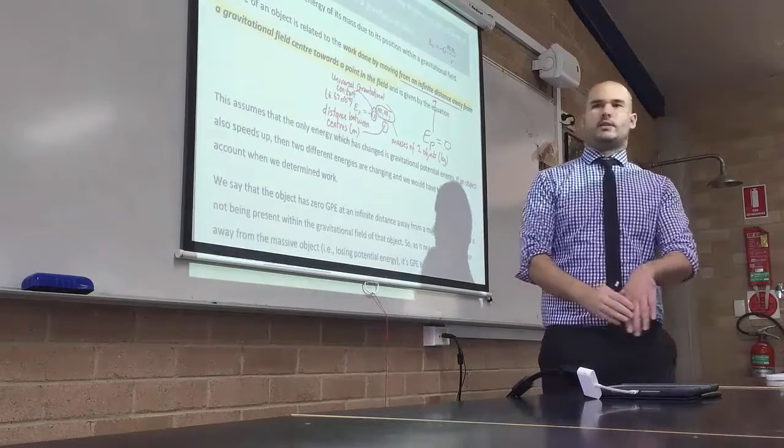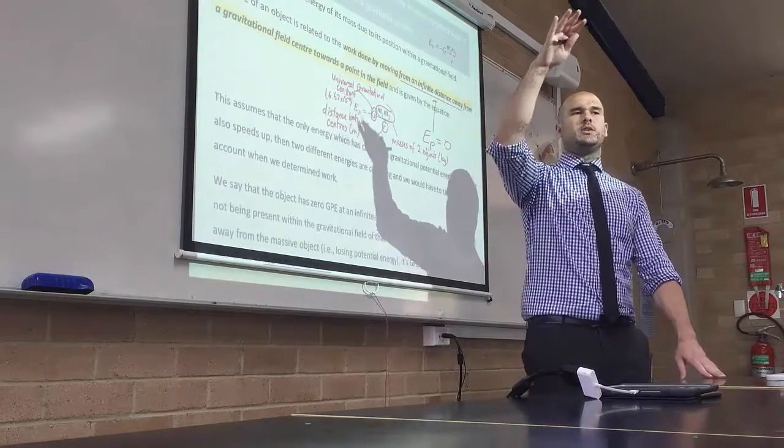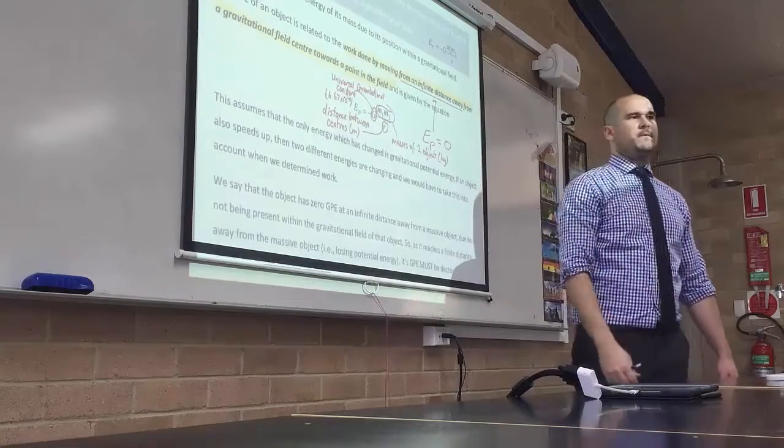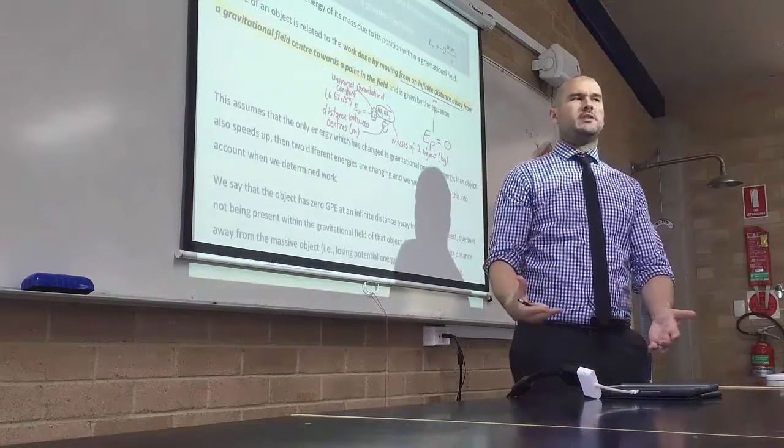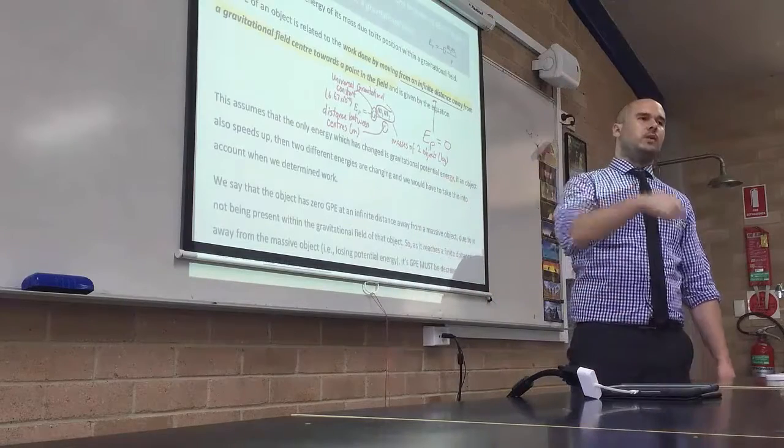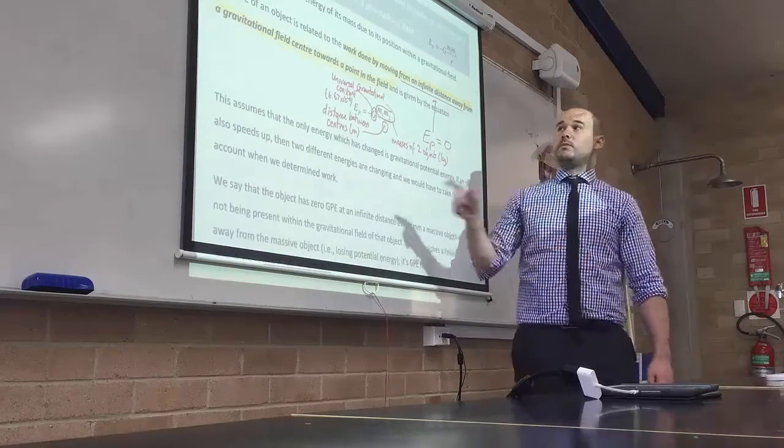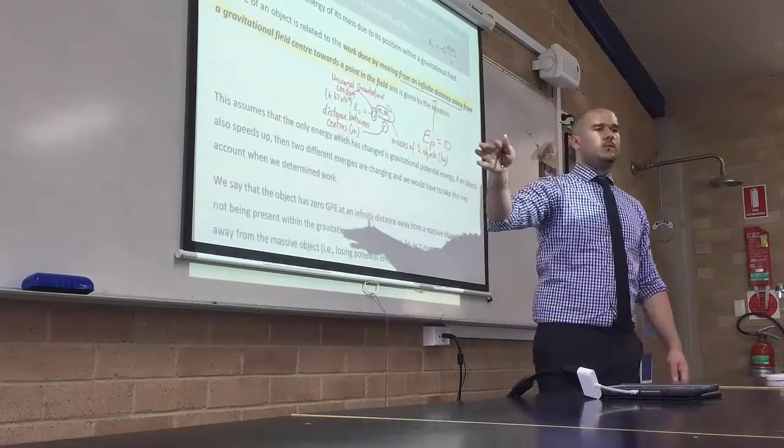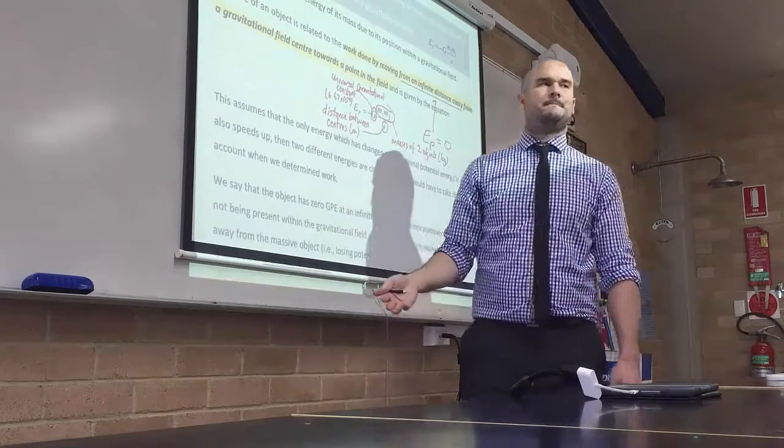So a certain amount of work done to get it there in the first place, that's change in GPE. A certain amount of work done to get it into orbit, that will be change in kinetic energy. And we'll look at the sum of both of those changes in energies to determine the total work done on that object. But for now, all we're doing is we're looking at stationary objects between point A and point B. We're not looking at changing kinetic energy just yet.